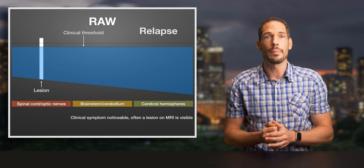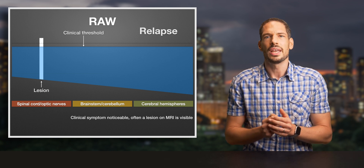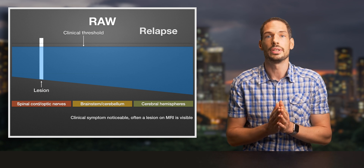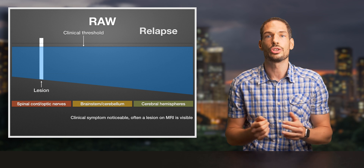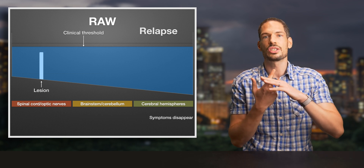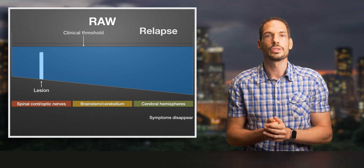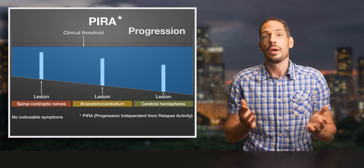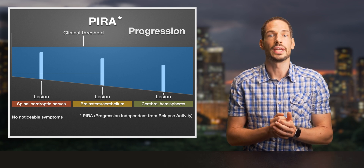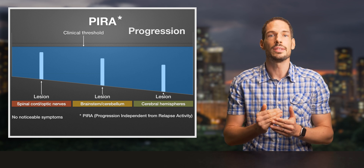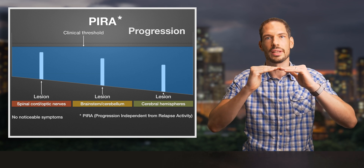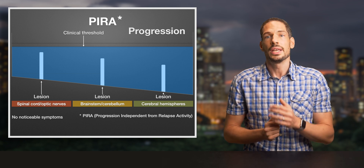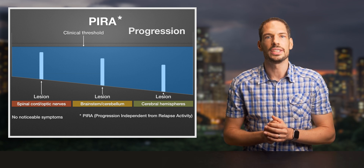The stalagmite in this example could represent an inflammation of the optic nerve. When it breaks through the water surface, this lesion could cause blurry vision in the left eye, for example. After a while, the acute inflammation will subside and the stalagmite — the lesion — might reduce beneath the surface of the water, meaning the clinical symptom disappears completely. Progression independent from relapse activity, also known as PIRA or neurodegeneration, is depicted as the decline of the water level in the pool. This represents the gradual depletion of functional capacity.